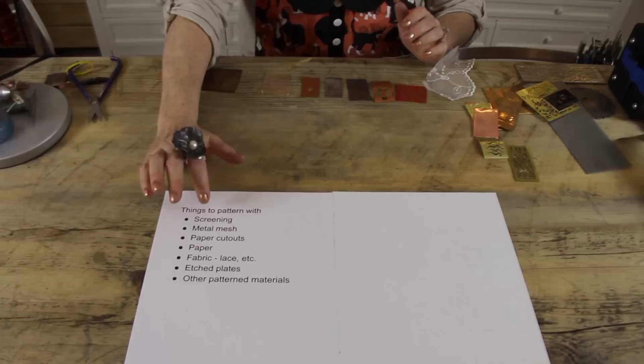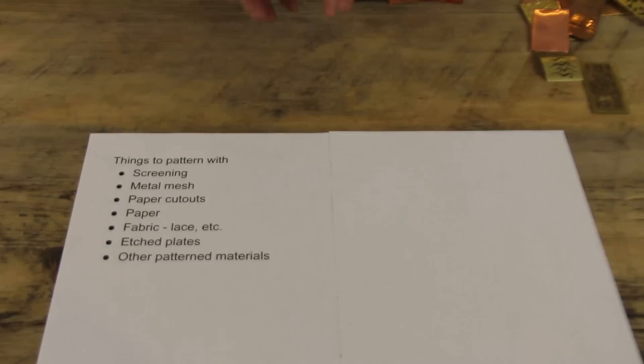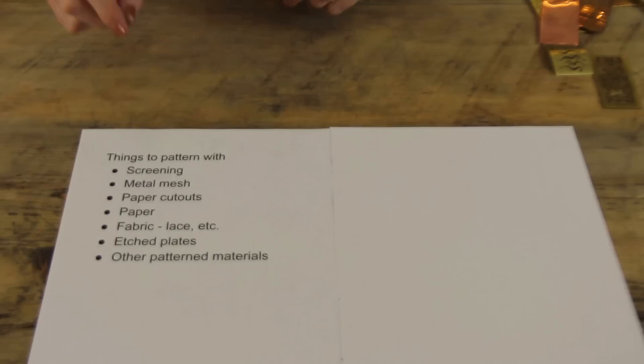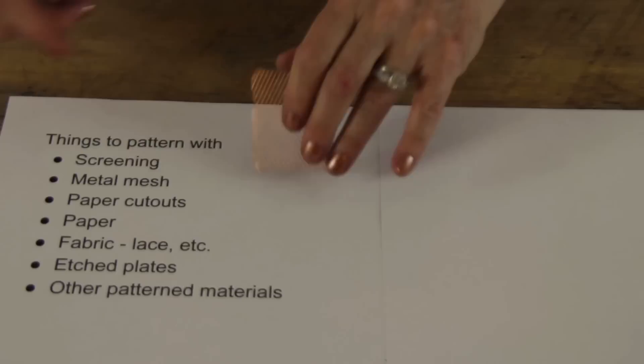There are quite a few ways that you can actually do that. The big thing to remember is always to protect the rollers. Down here I've got a brief list of things that you can use to pattern. The first thing that you can use is screening, like the kind you use for windows. A lot of the screening today is plastic. I haven't rolled that, it might work. But if you do use steel screening, you have to make this brass sandwich to protect your rolling mill. You can poke holes in screening, you can spread the fibers apart to make patterns.